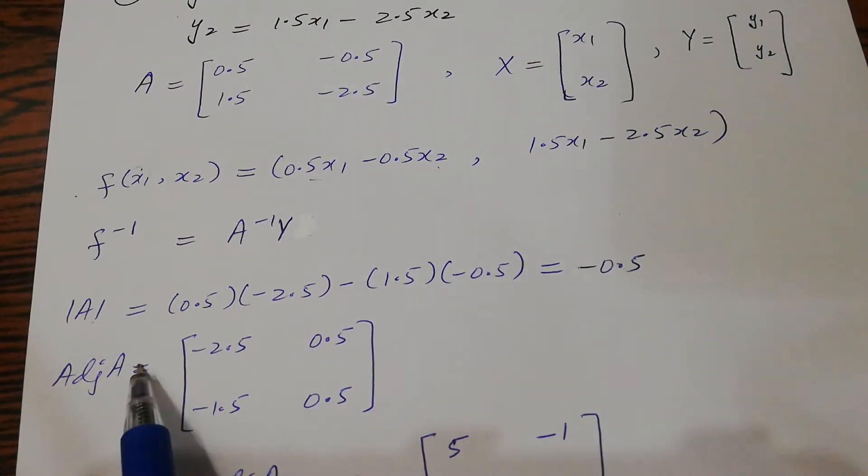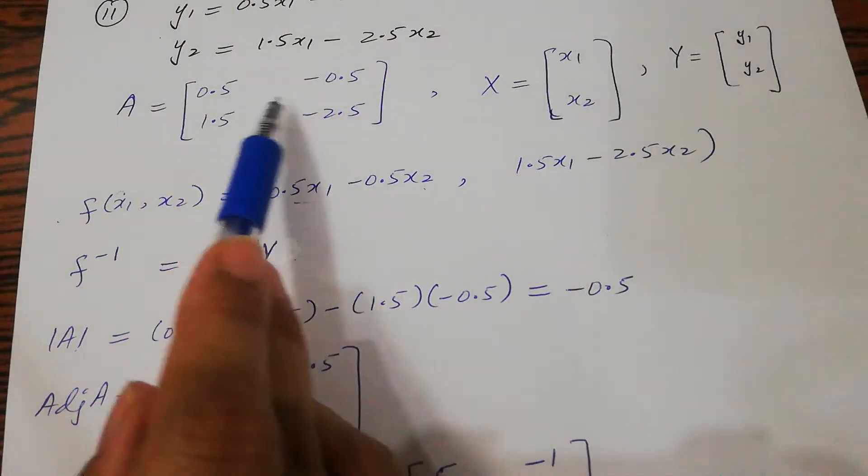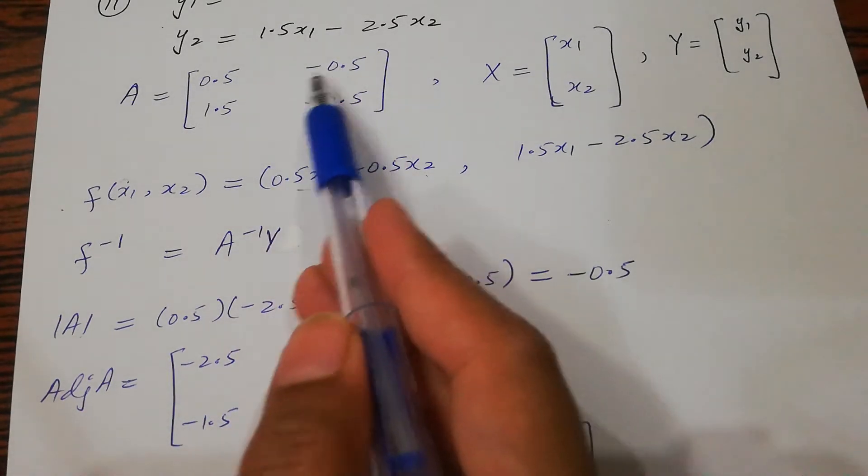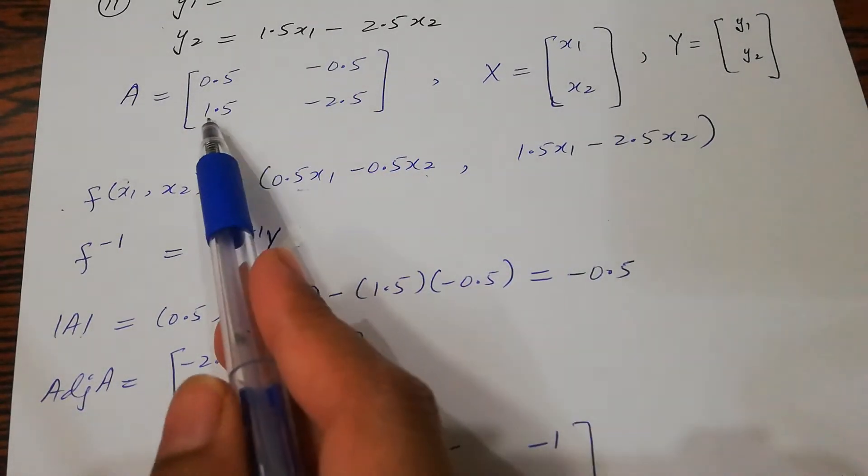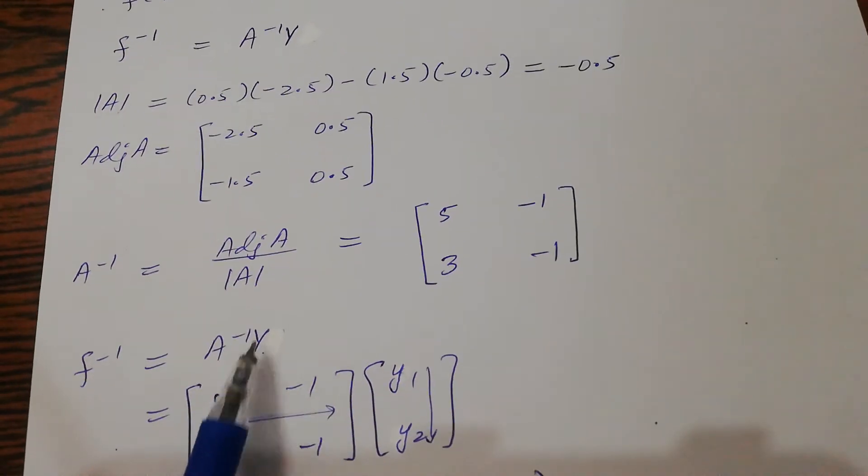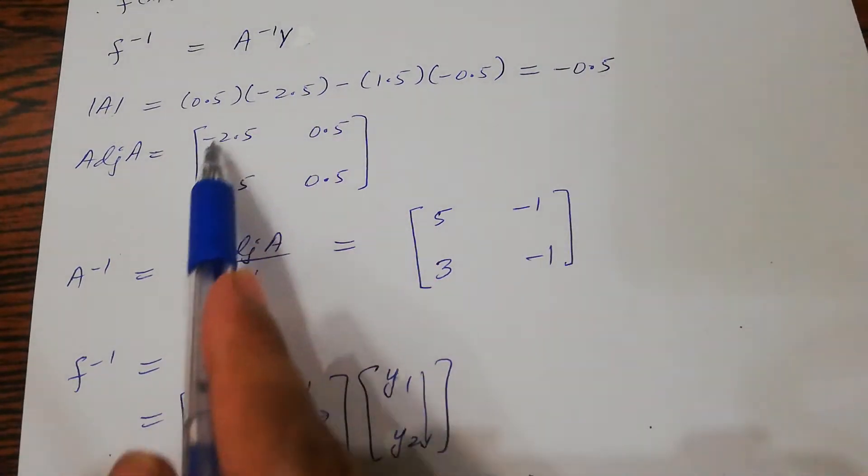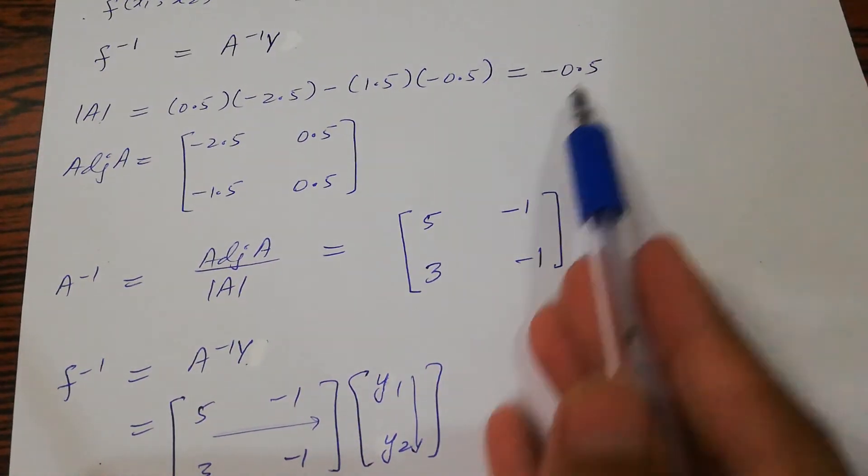Now find the adjoint of A. Change the place of the main diagonal elements and change the sign of the secondary diagonal. A inverse is adjoint of A over determinant of A. Divide the adjoint elements by -0.5.